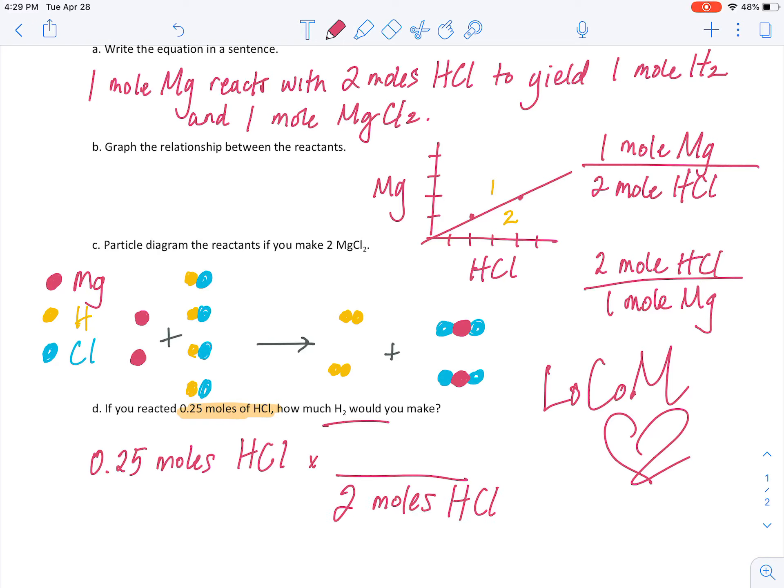Again, just a ratio of those coefficients. And, so the moles of HCl will cancel. You're going to multiply 0.25 by 1, and then divide by 2, and you get, for that answer, 0.125 moles of hydrogen gas.